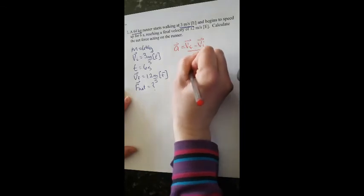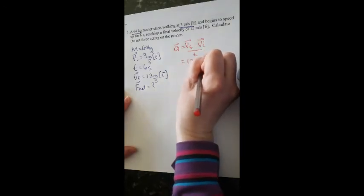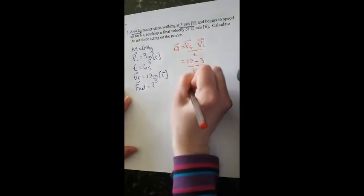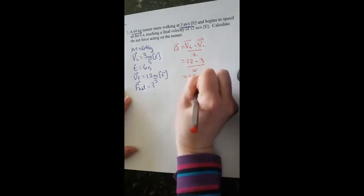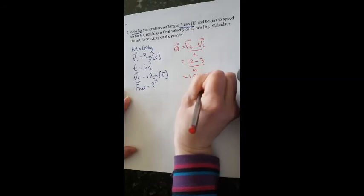So VF is 12, VI is 3, my time is 6. When I plug that into my calculator, I get 1.5 meters per second squared east.